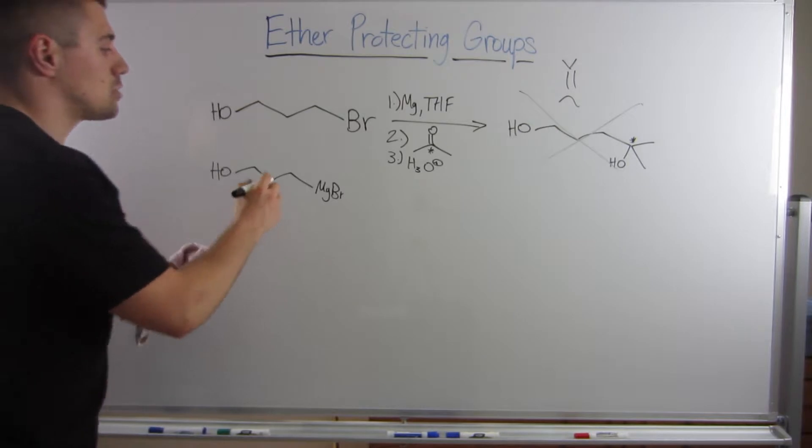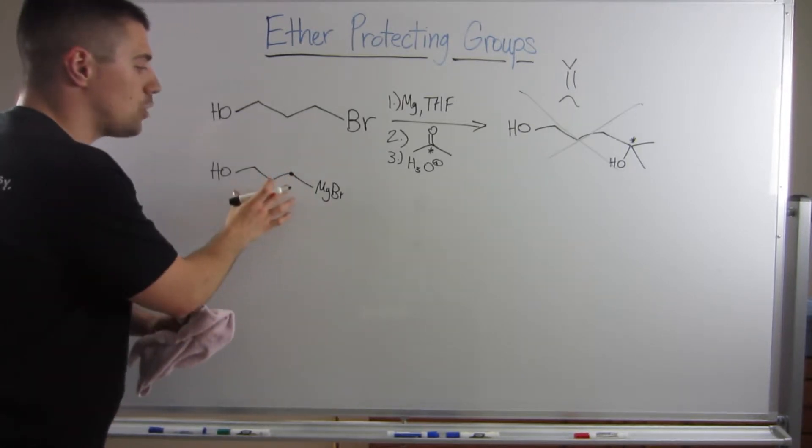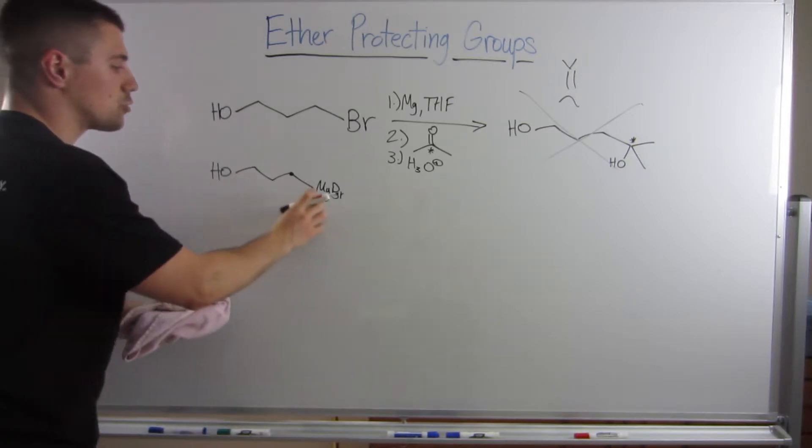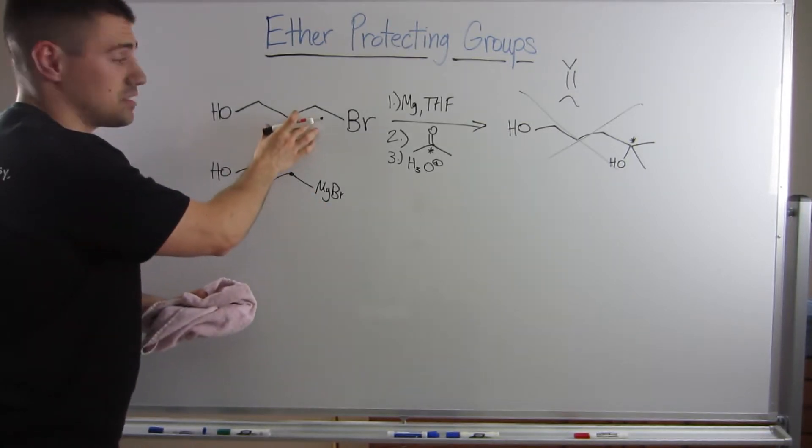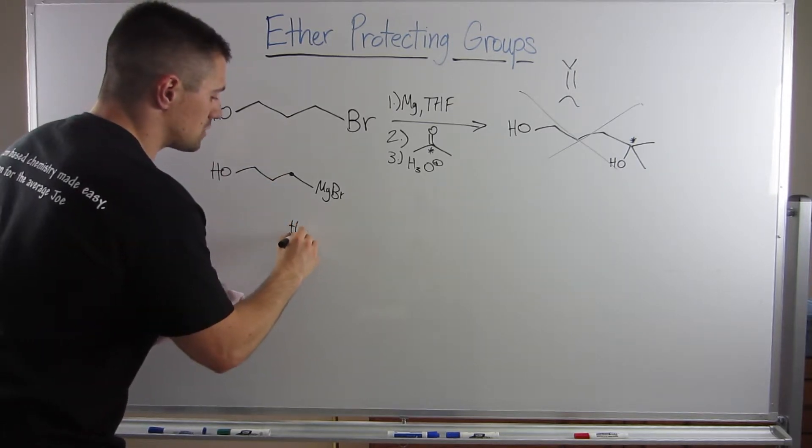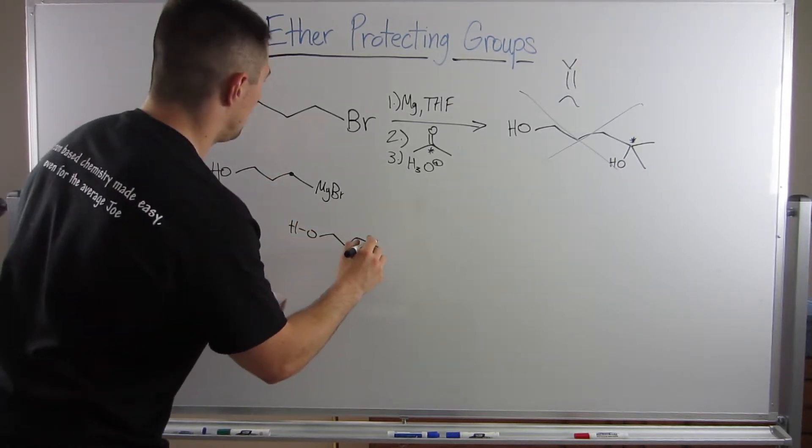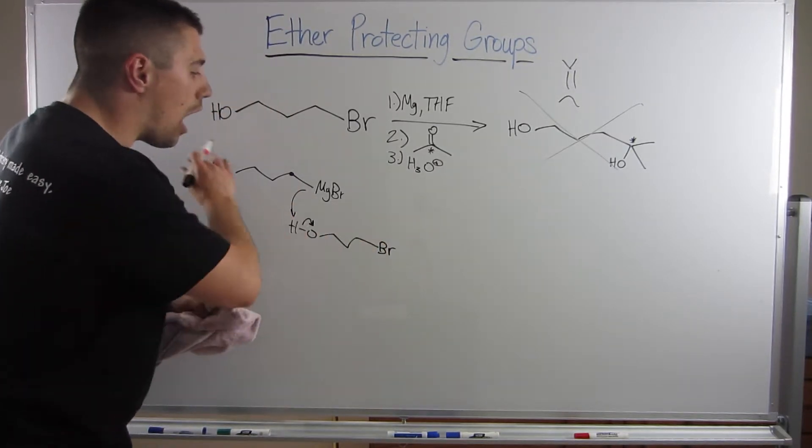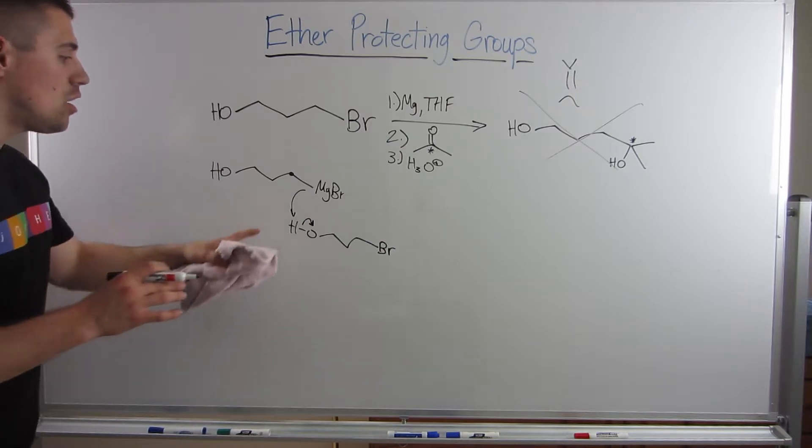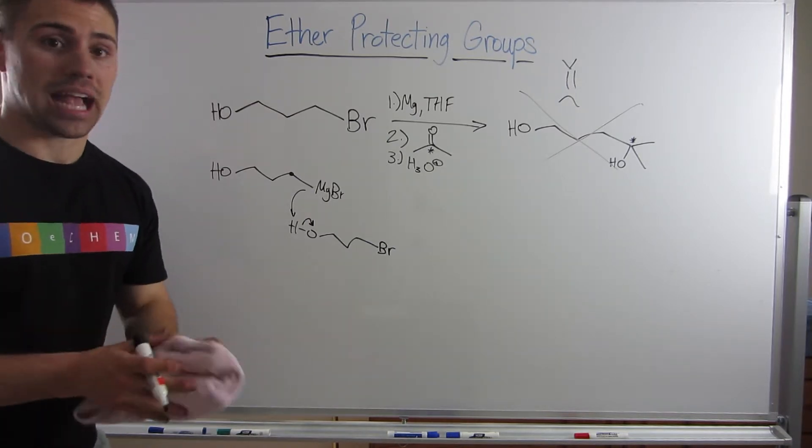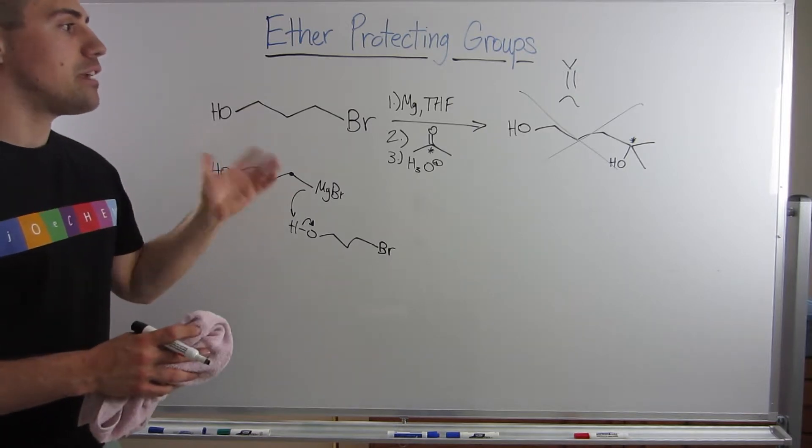So what happens is, as soon as you generate this Grignard, if it's not going to do it within itself intramolecularly, this Grignard will find another one of itself, whether it's a Grignard or not, and it's going to just do an acid-base reaction. Every single Grignard you generate will be spoiled by doing an acid-base reaction.